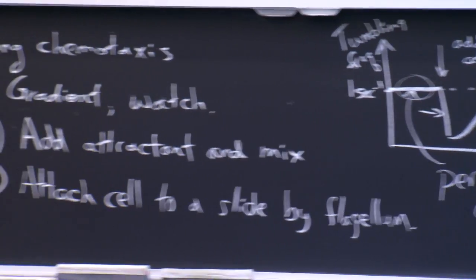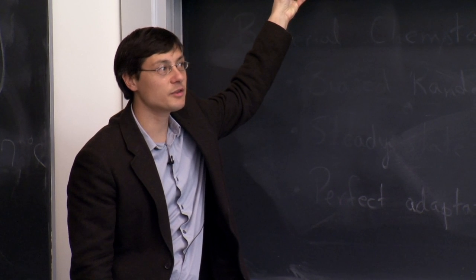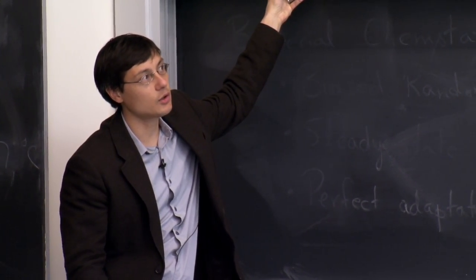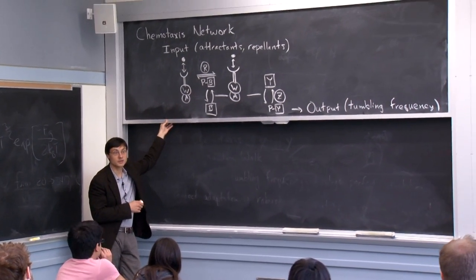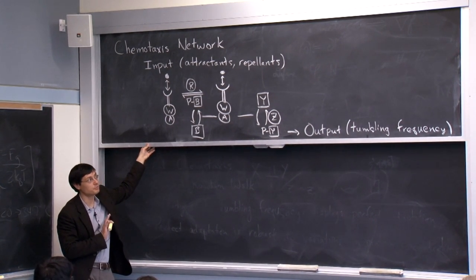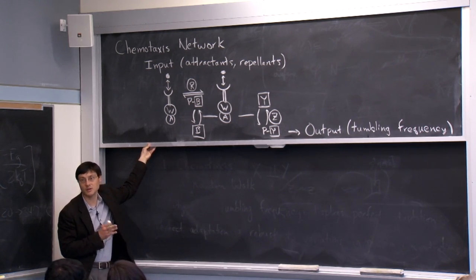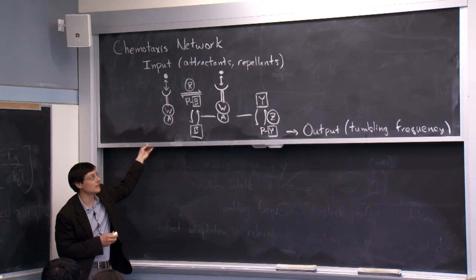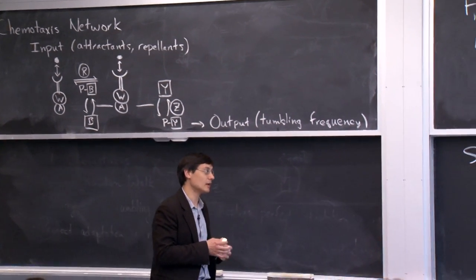The whole series of studies of bacterial chemotaxis — going back to Howard Berg and company, and then the robustness studies by Naama Barkai, Stan Leibler, and Uri Alon — represents a wonderfully beautiful exploration at the interface between physics and biology. You could teach an entire course just on bacterial chemotaxis and hit pretty much all major themes in biophysics over the last 40 years. The work ranges from Purcell's thinking about life at low Reynolds numbers, to limits on sensing concentrations and gradients, to this topic of robustness.